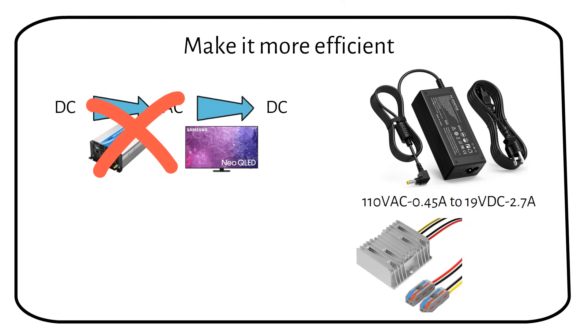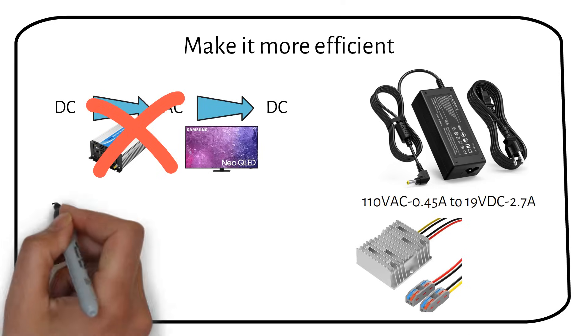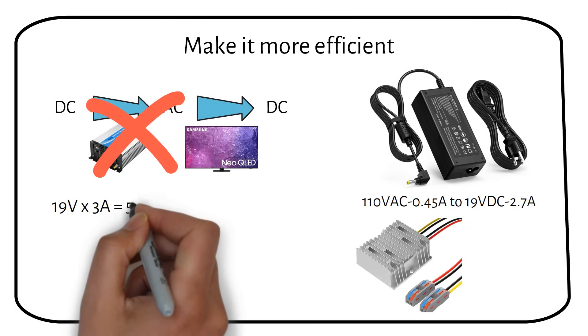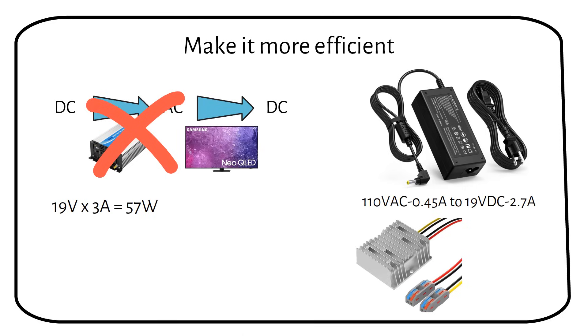This means you need a 12 volt to 19 volt DC boost converter that can handle 57 watts. If your TV doesn't have a power brick, then you cannot do this.